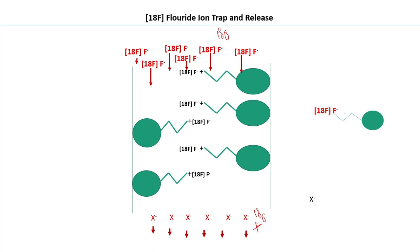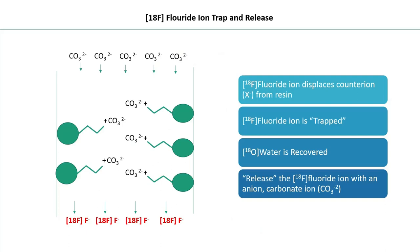Now we want to retrieve the F-18 fluoride ion — our nucleophile — for radiolabeling and other processes. We accomplish this by passing a potassium carbonate solution through the column. The carbonate ions pass through and cause the release of F-18 fluoride ion that was initially trapped on the bead.